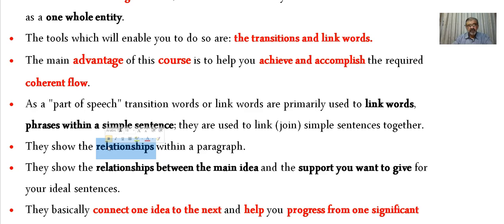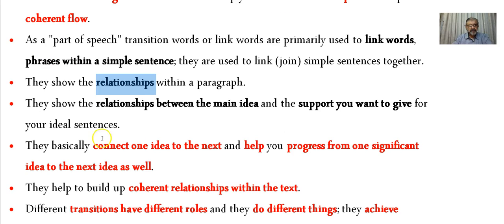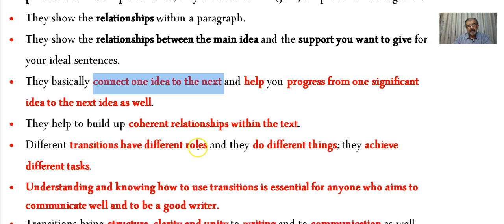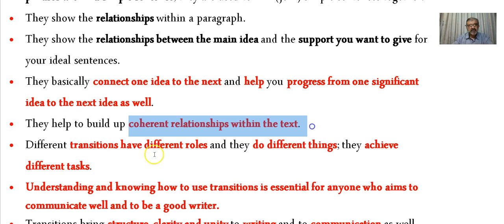Transitions show the relationships within a paragraph — the functions you have in mind. They show the relationship between a main idea and the support you want to give for your sentences. They connect one idea to the next and help you progress from one significant idea to the next as one coherent whole.